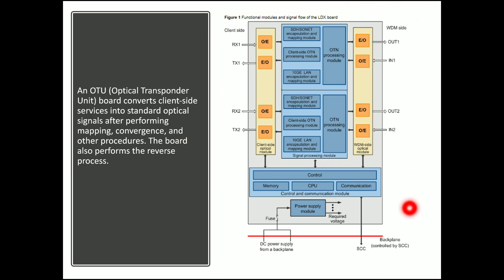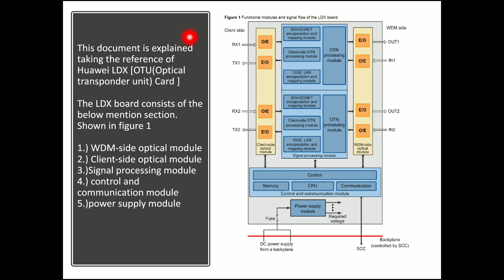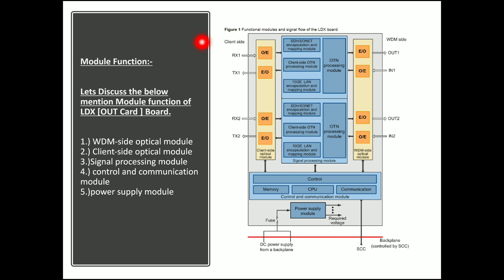On the right-hand side, you can see the signal flow diagram or the internal structure of the OTU optical transport unit. This document explains it taking reference of the Huawei LDX card, which is the OTU optical transponder unit card. The LDX board consists of the following sections: WDM side optical module, client side optical module, signal processing module, control and communication module, and power supply module.